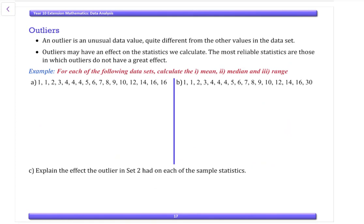Now, outliers. An outlier is an unusual data value, quite different from the other values in the data set, so it doesn't seem to fit. Outliers may have an effect on the statistics we calculate. The most reliable statistics are those in which outliers do not have a great effect. So here it says, for each of the following data sets, calculate the mean, median, and range.